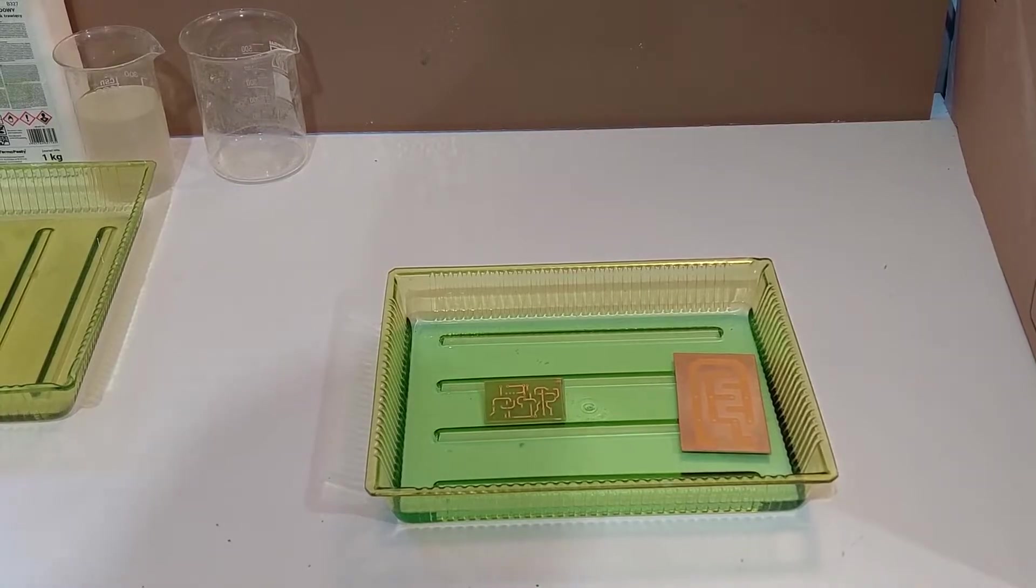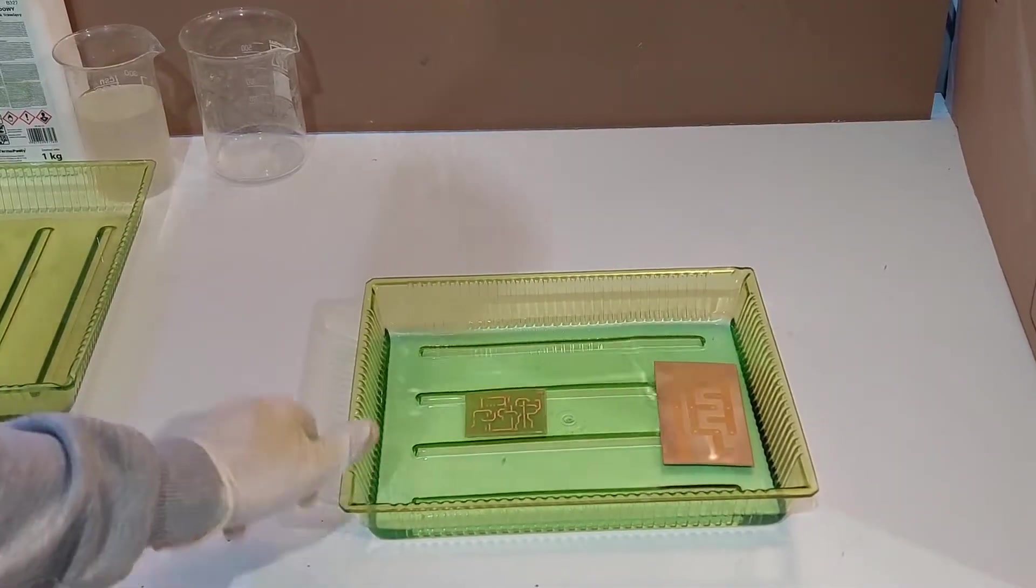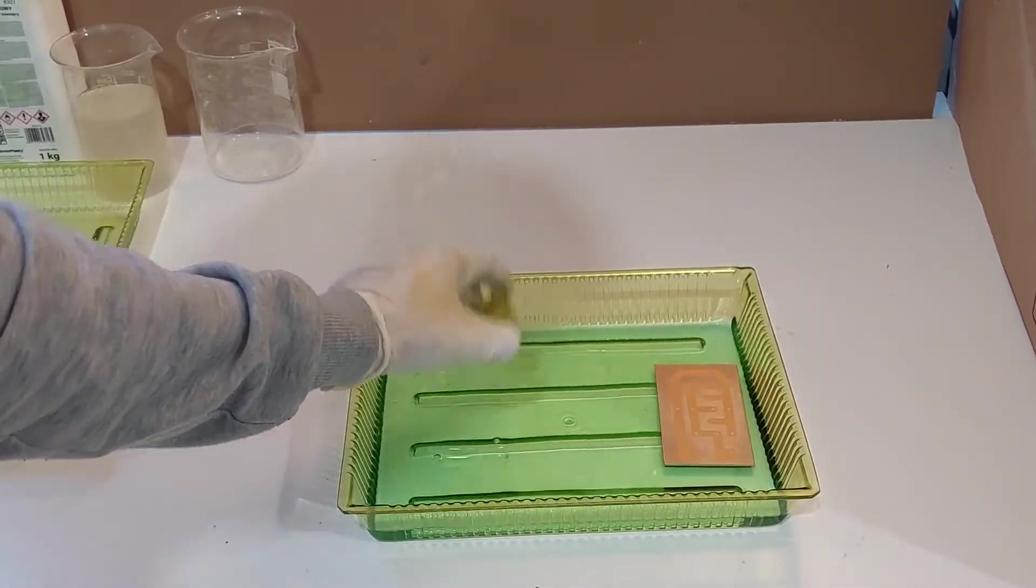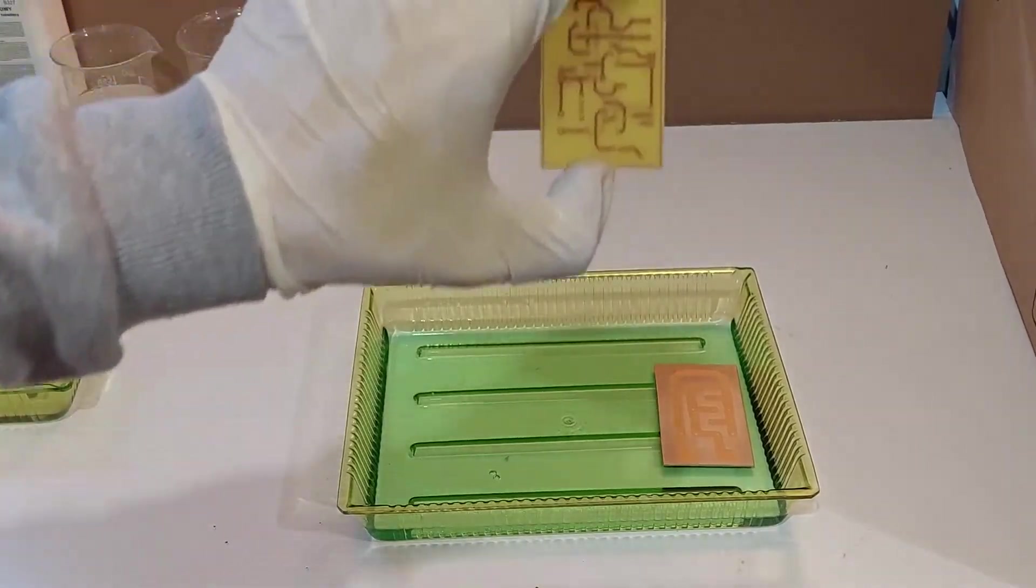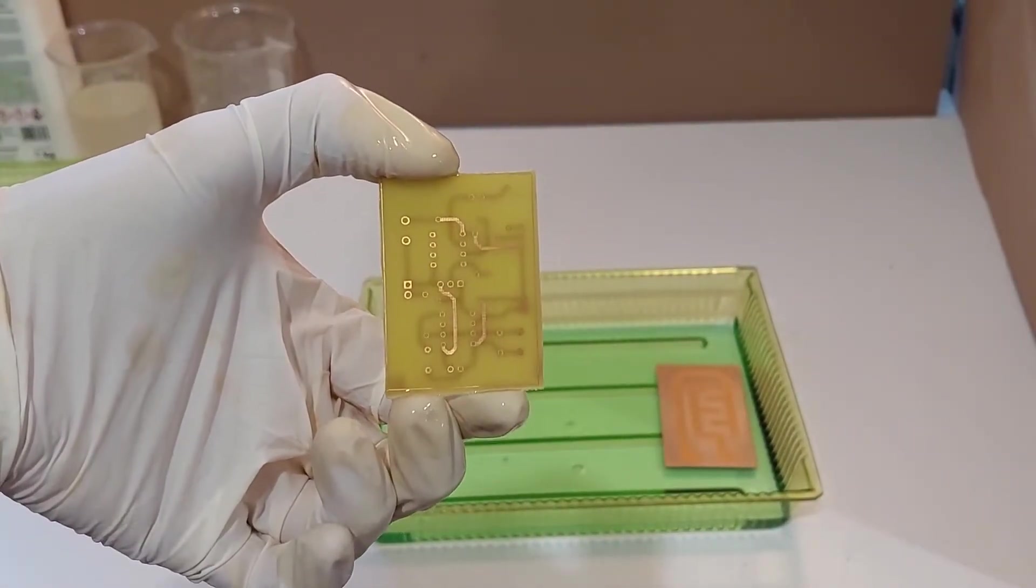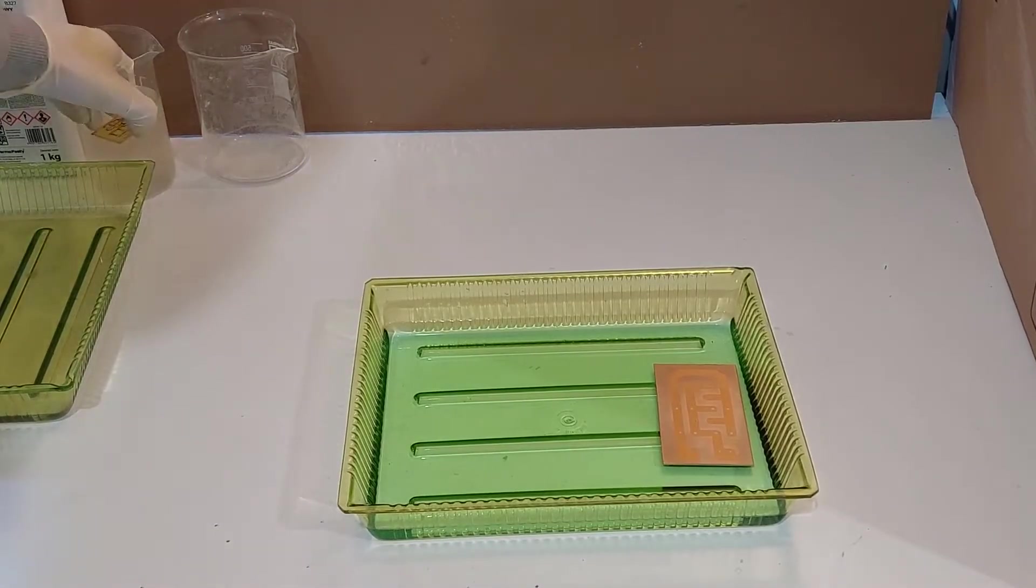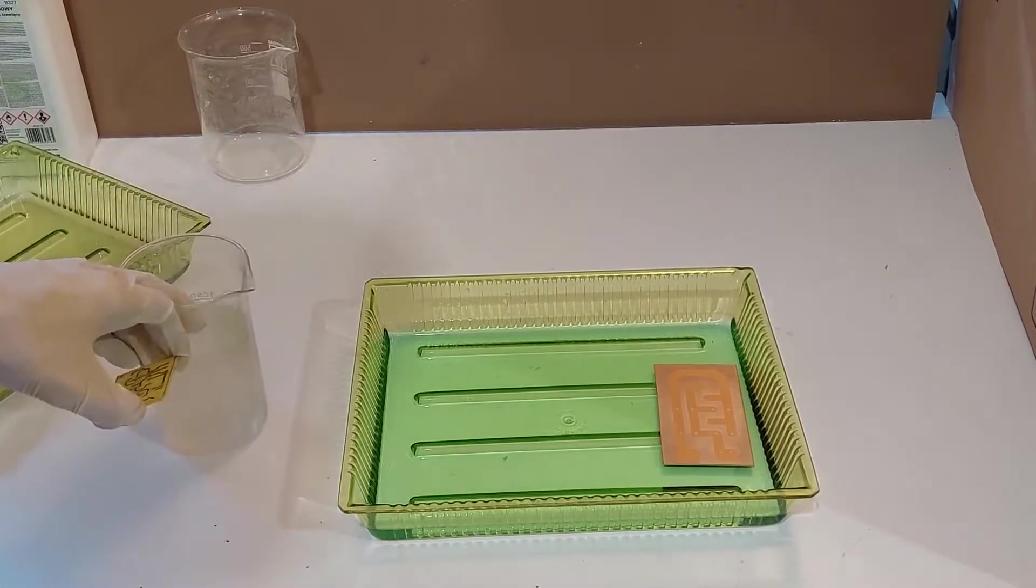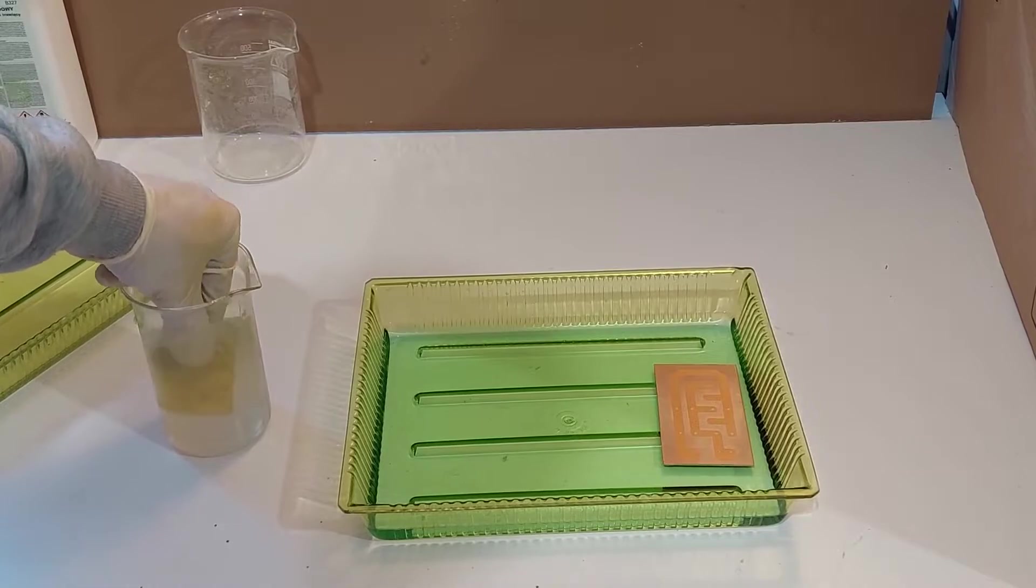Etching is now complete. As you can see the board has been basically fully etched and what's only left on it is the copper traces we needed. So let's just rinse the board off in some clean water.